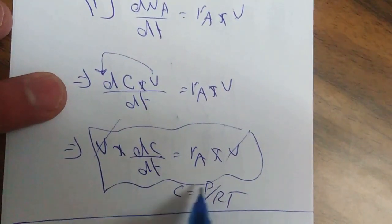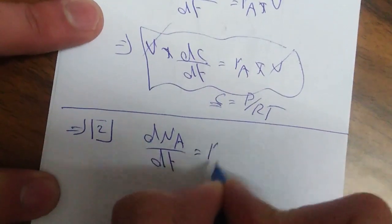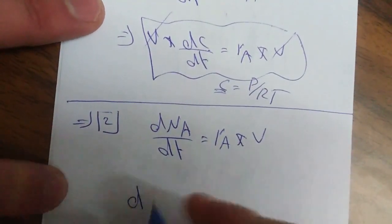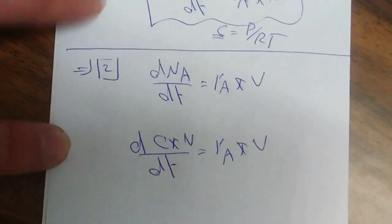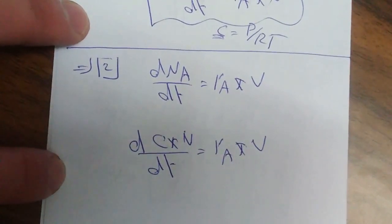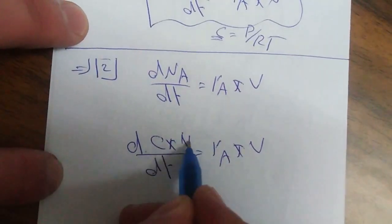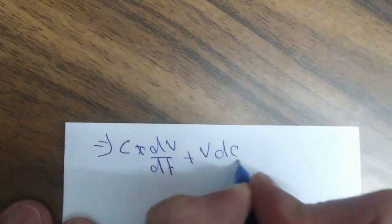الحالة الثانية: constant Pressure والـ Volume بتغير. بطبق dN_A/dT = r_A times Volume، بما أن N_A = C_A times V والـ Volume مش constant، بلازم أشتق بالنسبة للـ Volume مرة وبالنسبة للـ Concentration مرة ثانية. فرح يصير: C_A × dV/dT + V × dC_A/dT = r_A × V.